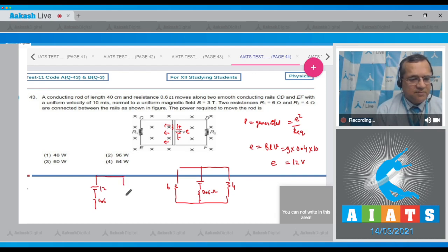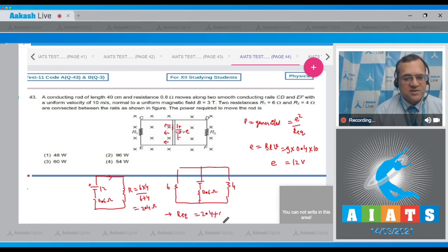In parallel, this resistance becomes (6 × 4)/(6 + 4) = 2.4 ohms. The total resistance is 0.6 ohms from this arm plus 2.4, so the equivalent resistance Rₑq = 2.4 + 0.6 = 3 ohms.